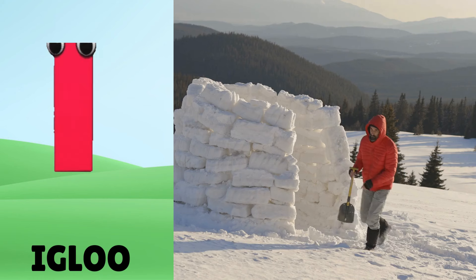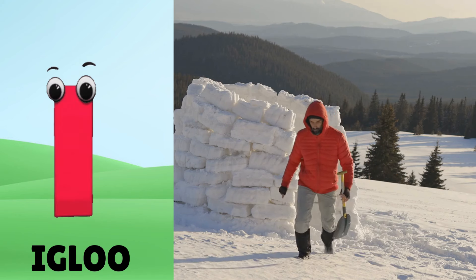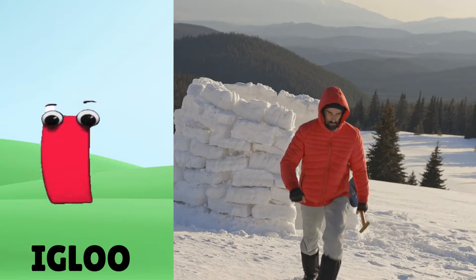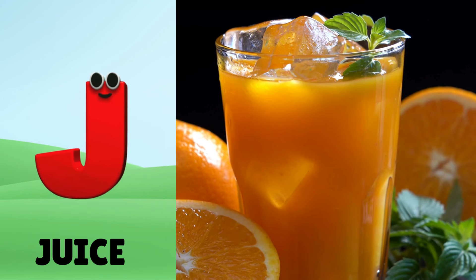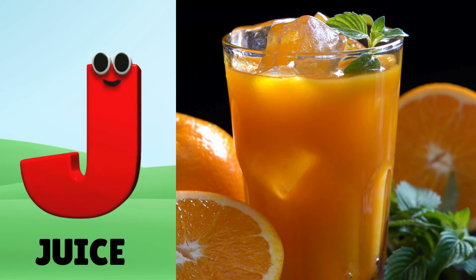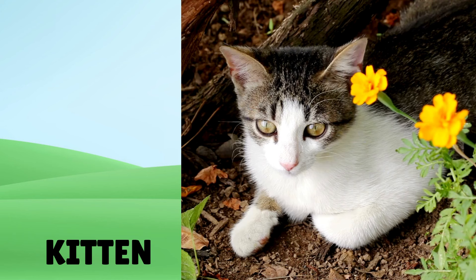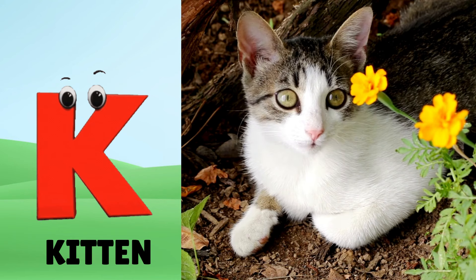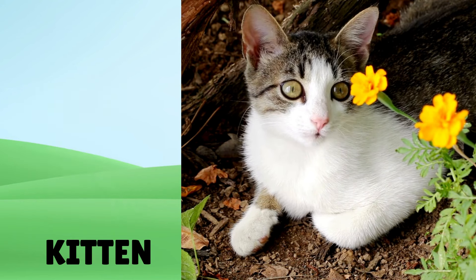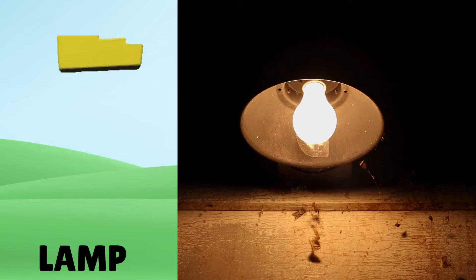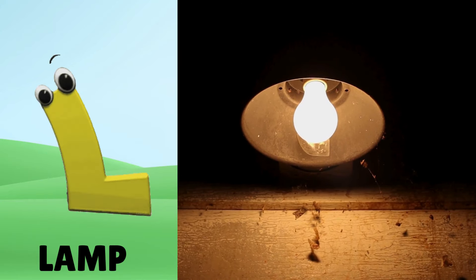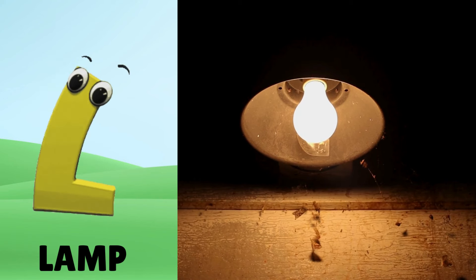I is for Igloo. J is for Juice. K is for Kitten. L is for Lamb.